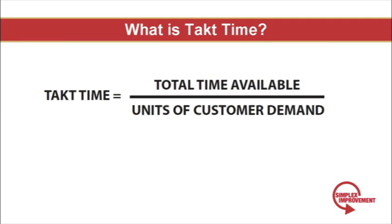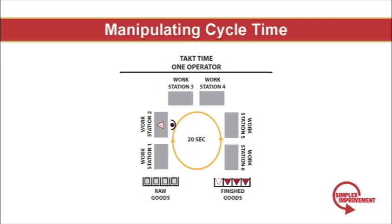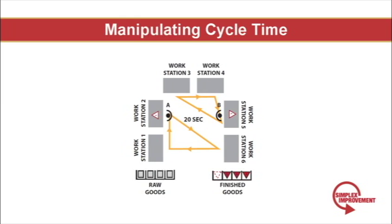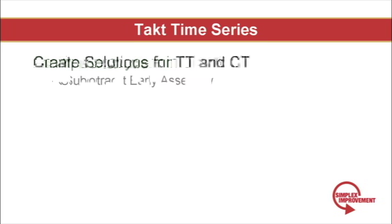What about manipulating cycle time? This can be done by adding or removing workers or adding or removing machinery. In this quick example, our worker is able to meet the Takt time of 60 seconds, but then the Takt time changes to 30 seconds. So we manipulate our cycle time by adding another worker to the cell. We split the work between the two workers and now they can meet the Takt time of 30 seconds. If adding workers doesn't reduce your cycle time enough, you could subcontract some of the early stage assembly so all your facility has to do is final stage assembly. You shouldn't feel victimized by your cycle time — if you can't meet Takt time, come up with a creative solution to manipulate your cycle time. Still can't meet Takt? Change your Takt. Can't add another shift? Subcontract half the volume demanded by your customer. The choices are limitless if you just take some time to think about it.